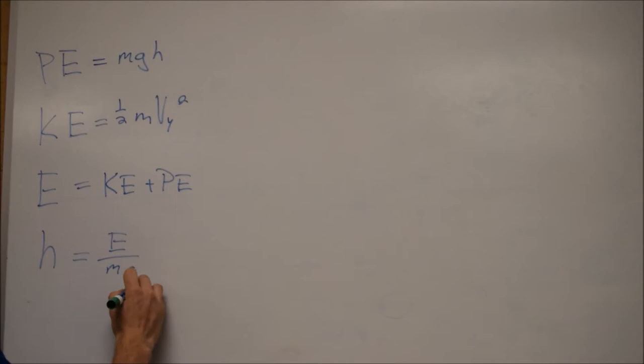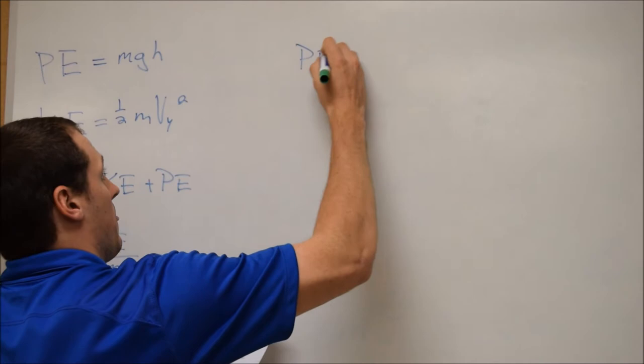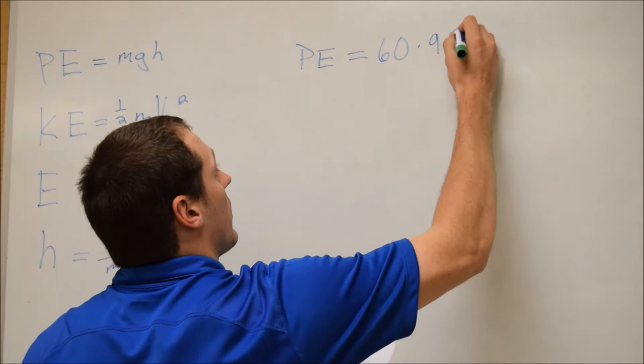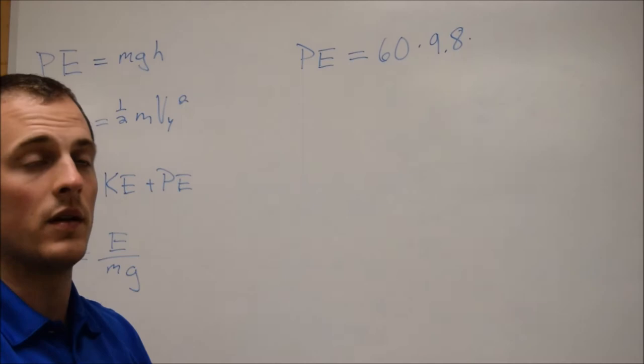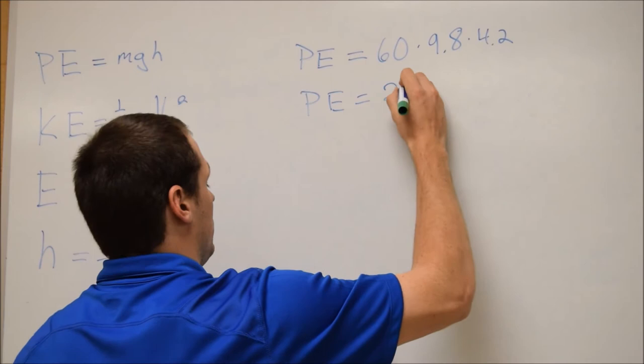So what we're going to do is first we need to solve for potential energy. We have our mass which is 60, our gravity which is always 9.8, but for this stuff gravity is going to be negative or positive. So this is the only time where gravity is going to be a positive number. Just keep in mind any time that we're dealing with energy that you can just keep the gravity being a positive number. And then times the height which is 4.2. So insert math here and you get 2469.6.